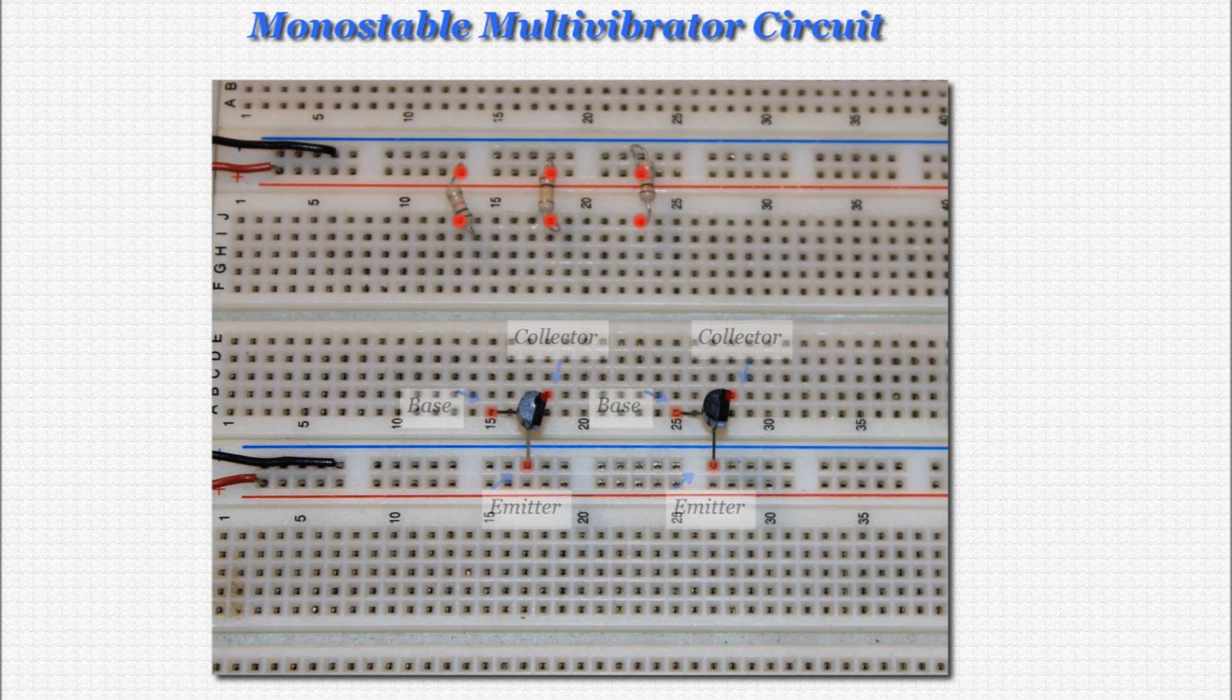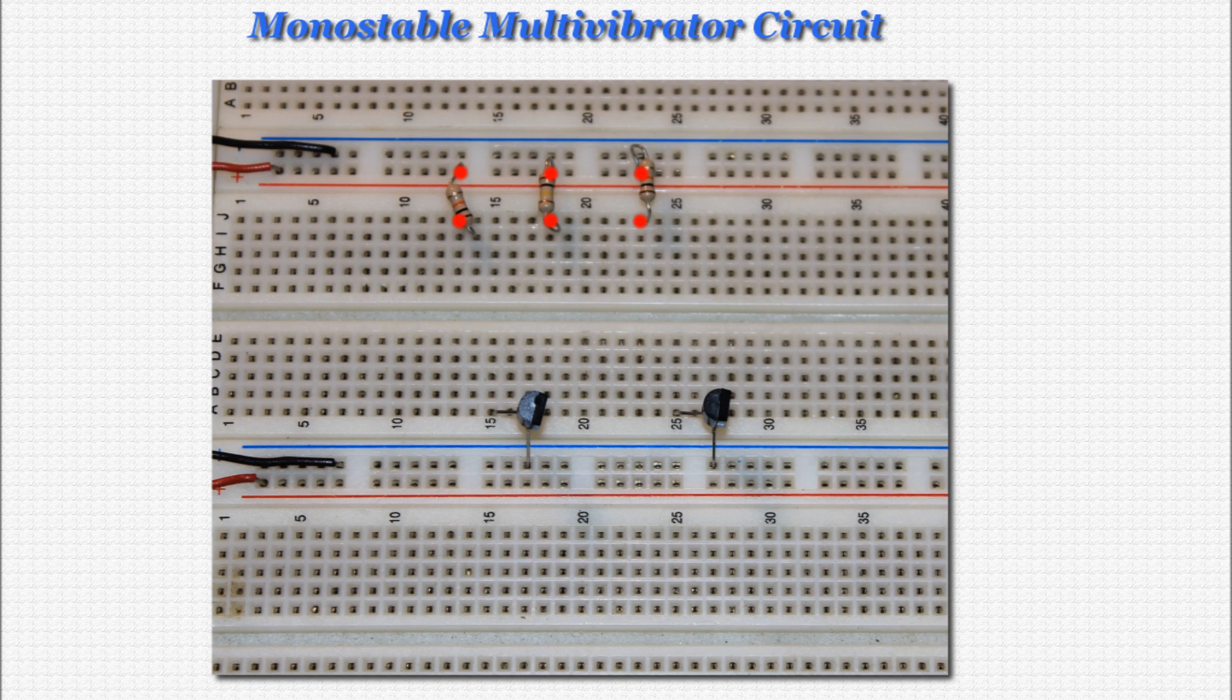Next, place two 10k ohm resistors, the outside ones on screen, and the 100k ohm resistor, the middle one, as shown.